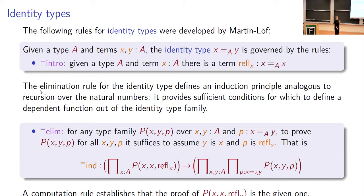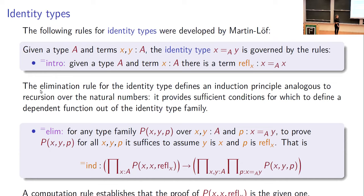The identity type exists whenever you're given a type A and two terms X and Y belonging to the same type. One of the roles played by types in dependent type theory is that they encode propositions. The existence of the identity type — written X equals Y subscript A — is saying it's mathematically meaningful to wonder whether X and Y can be identified whenever they are two terms of the same type. The introduction rule inhabits the identity type x equals x for any x — asserting reflexivity. The term refl x is a proof of that, inhabiting the identity type.